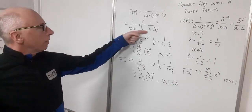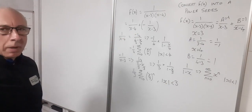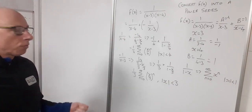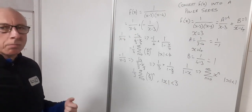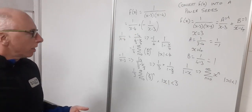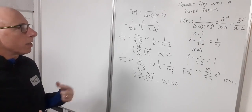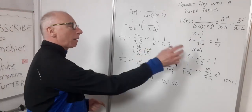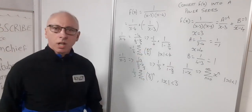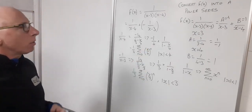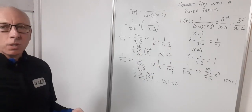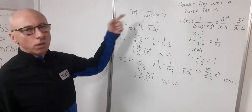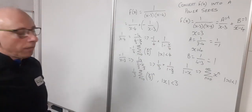Now let's turn this into two power series and combine them using the rules for combining power series. We'll write both power series side by side and then combine to get the final power series for f(x).